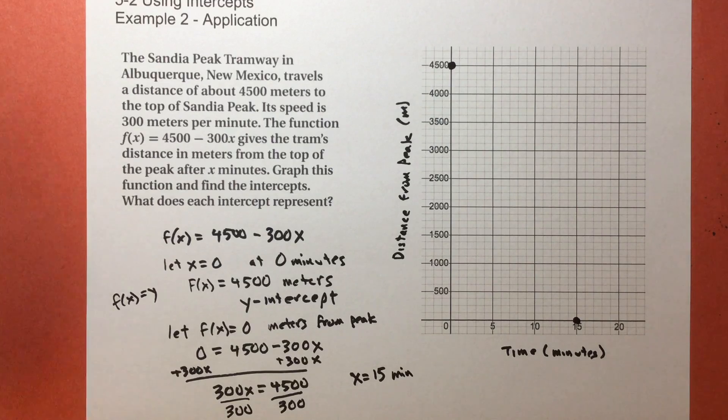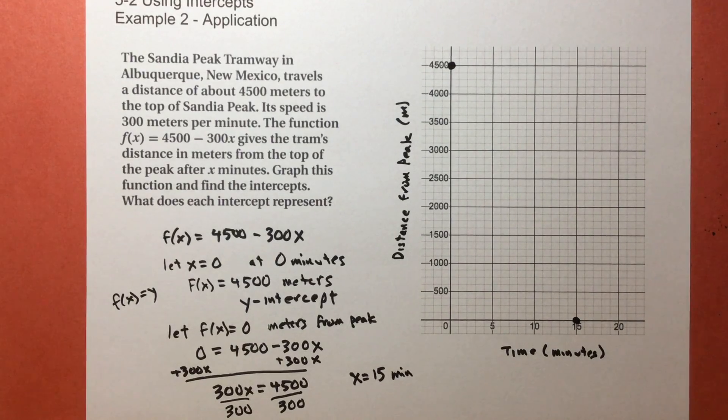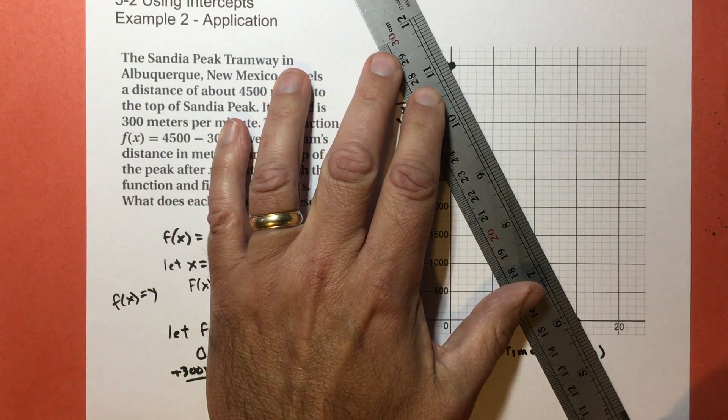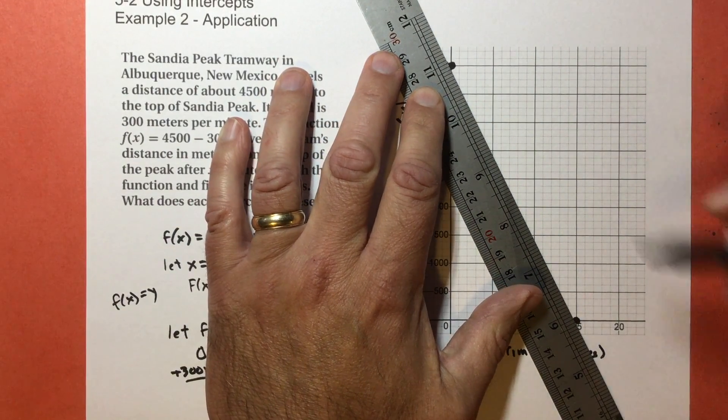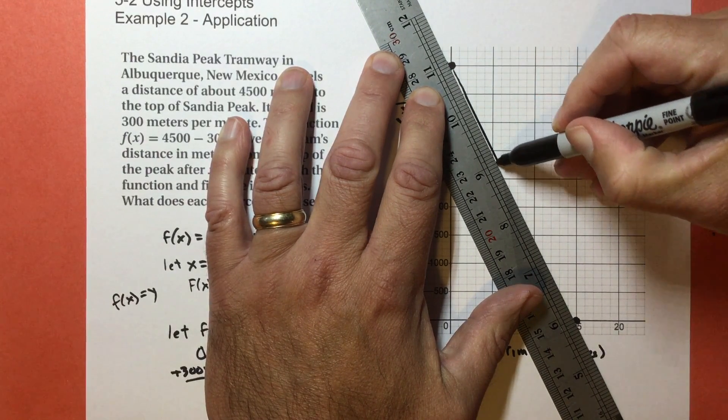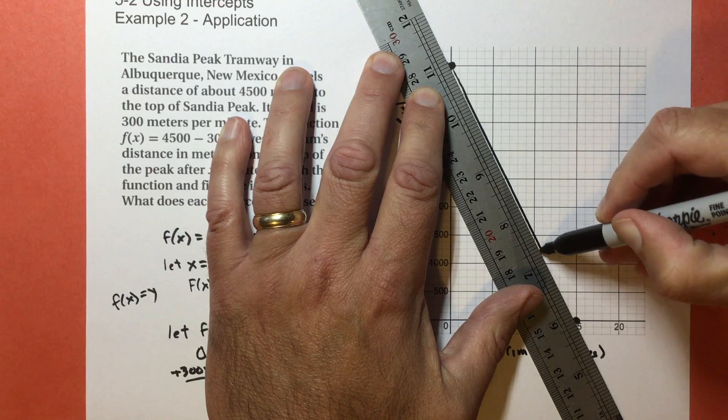Now I need to grab a ruler. I don't think I can draw this freehand. Give it a try, though. So the graph is going to look something like this.